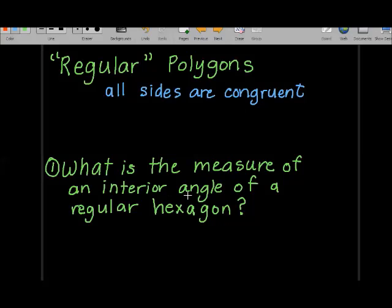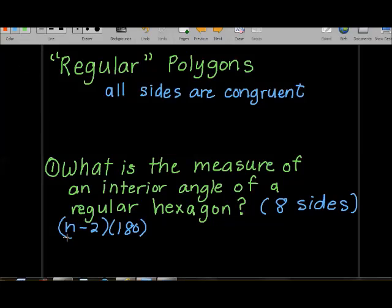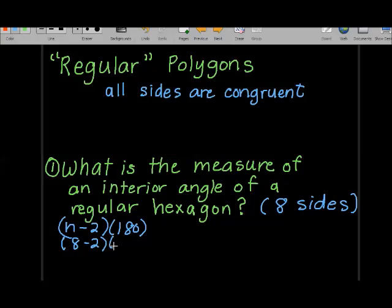What's the measure of an interior angle of a regular hexagon? A hexagon has 8 sides. I need to figure out what they all add up to, then divide by the number of angles. We've got 8 sides, so the formula is n minus 2 times 180. That's 8 minus 2 times 180, which is 6 times 180. 6 times 8 is 48, 6 times 1 is 6 plus 4 is 10, so we get 1,080.